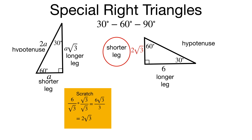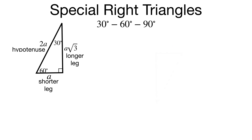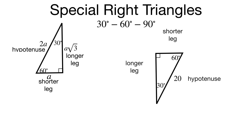Now that we have the shorter leg, we get the hypotenuse by doubling it: 2 times 2 radical 3 gives 4 square root of 3. In our last example, I know the hypotenuse — the side opposite the 90. The side opposite the 30 is the shorter leg, and the side opposite the 60 is the longer leg. Always go to the shorter leg first. Shorter leg times 2 is the hypotenuse, so divide by 2: 20 over 2 gives a shorter leg of 10. Then multiply by the square root of 3 to get the longer leg: 10 square root of 3.